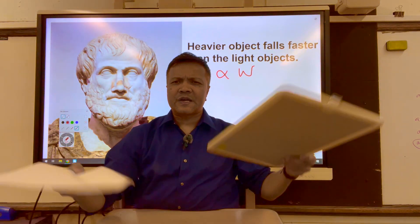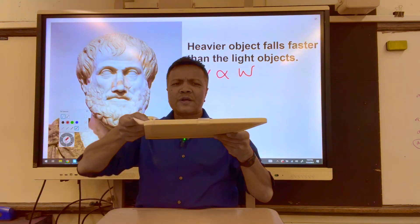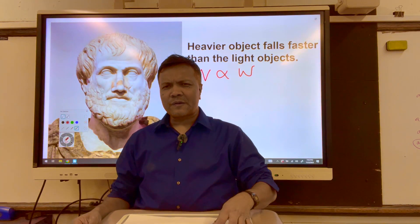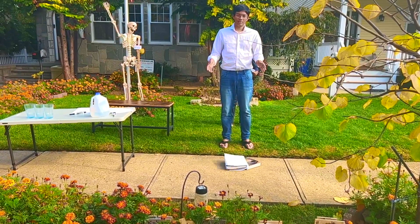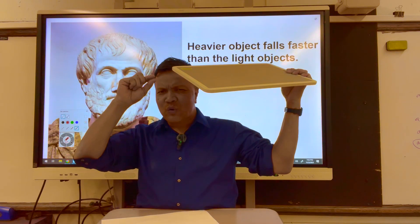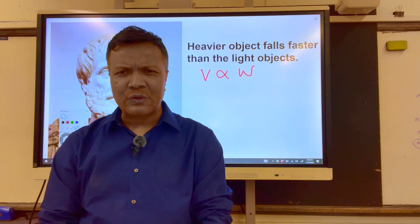You see that the heavy object passes the ground faster than the light object. But what if I drop them like this — drop them together. What happens? This heavy object creates a vacuum along the path of this light object. Drop the two of them, and hopefully they'll hit the ground at the same time. And as you saw, it does work on the moon.